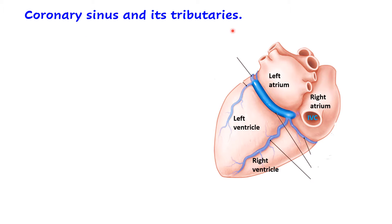Let us start with the coronary sinus and its tributaries. In this diagram we can see the posterior surface, or base of the heart, made up by the left and right atrial chambers. This is the diaphragmatic or inferior surface of the heart, to which both ventricles contribute. Between the atrial chambers and the ventricles we have a groove known as the atrioventricular sulcus or coronary sulcus — this is its posterior part. The anterior part of the coronary sulcus is present on the sternocostal surface. The posterior part can be divided further: between the left atrium and left ventricle is the left posterior part of the coronary sulcus, and between the right atrium and right ventricle is the right posterior part of the coronary sulcus.